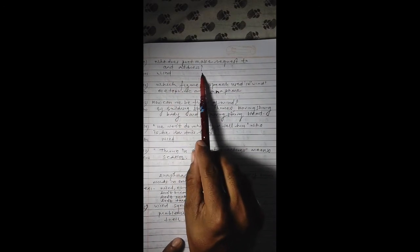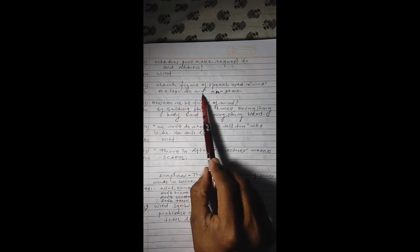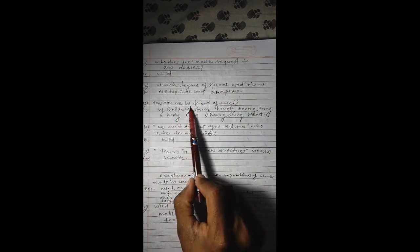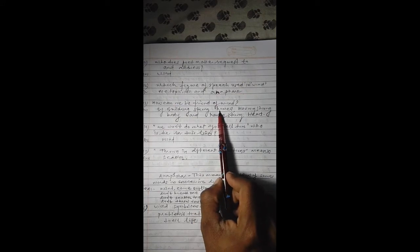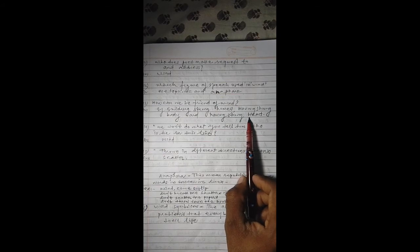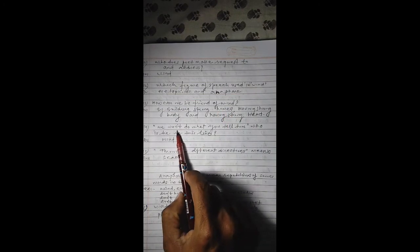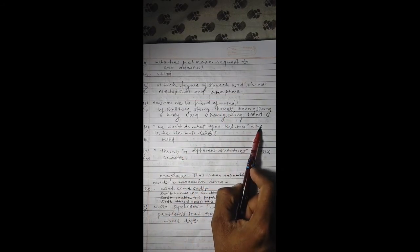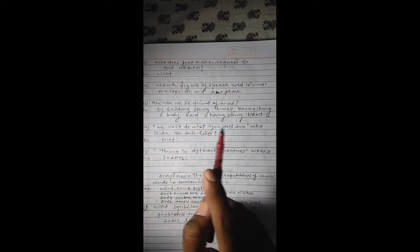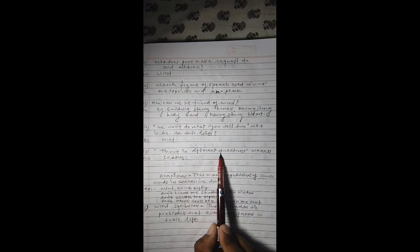Who does the poet make a request to and address? The wind. Which figure of speech is used? That is metaphor and the second one is anaphora, which we will discuss ahead. How can we be friends with wind? By building strong homes, having a strong body, and having a strong heart. When we become courageous and strong, we won't be thrown in different directions by the wind.